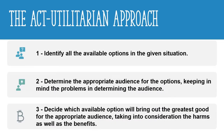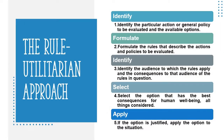We move on now to the act utilitarian approach, which represents utilitarianism in its purest form. The first step is to identify all possible options — everything is on the table, leave nothing out. Second, determine the people that will be affected by those options. Finally, select the option with the maximum human benefit and inform your audience. If you thought the act utilitarian approach would be extreme and may allow for a multitude of atrocities, you might be onto something. For that reason, the rule utilitarian approach was developed.